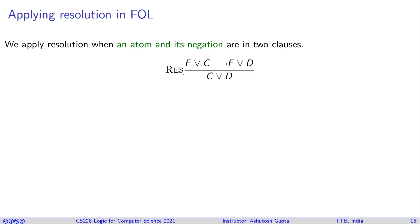So what was resolution? Resolution was like this. So you have a F or C and not F or D, you can derive C or D. This F and not F get cancelled and then union is applied. So that is the essence of resolution.